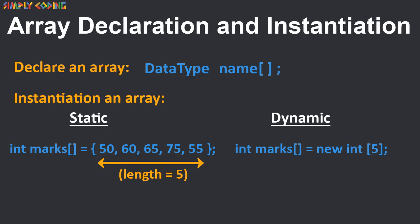Second method is where during runtime, you use the new operator to assign space for the array. Here, you have to specify what is the size of the array. Since array is an object, it has a length member variable which gives us the length of the array.